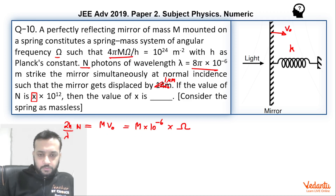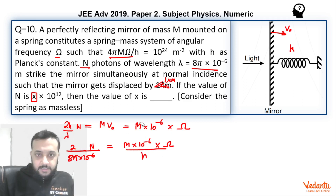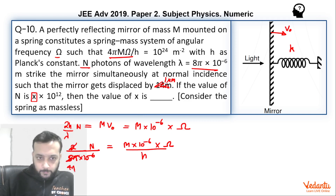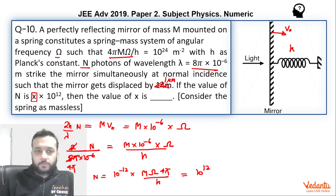Now we can substitute the values. Lambda is 8π × 10⁻⁶, so 2h/(8π × 10⁻⁶) × N equals m × 10⁻⁶ × ω. Rearranging by bringing h to the other side, we get N = 10⁻⁶ × (4πmω/h). Since 4πmω/h = 10²⁴ as given, and the 10⁻⁶ factor brings in 10⁻¹², we get N = 10¹². So x = 1. This was the answer given by IIT.